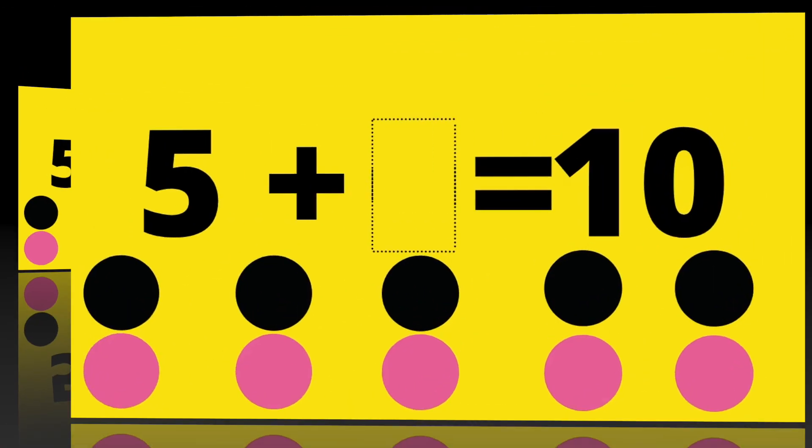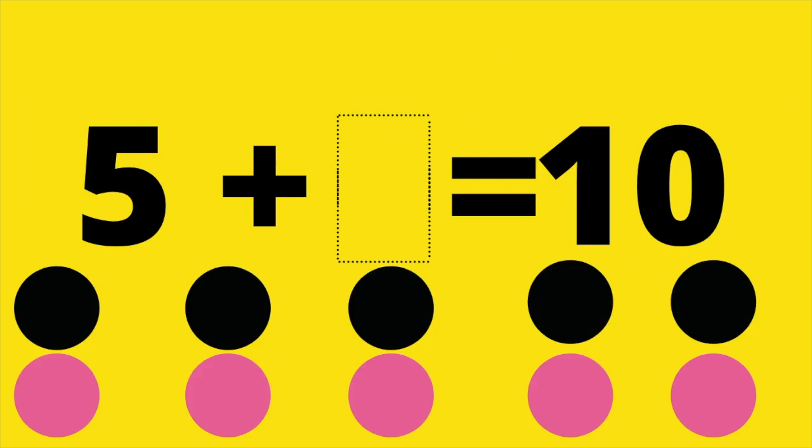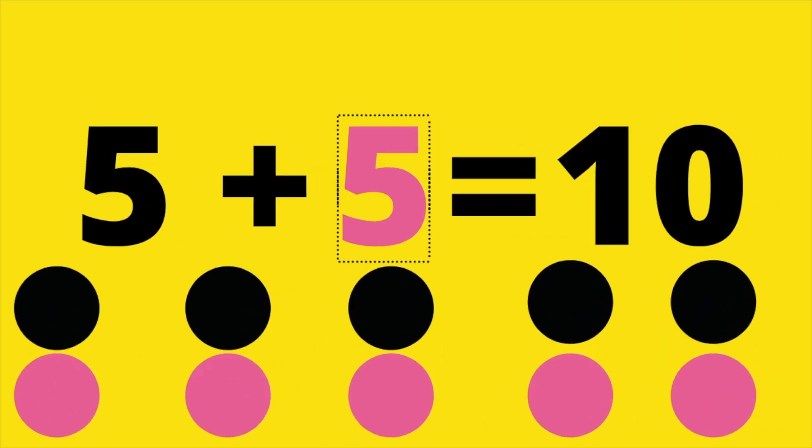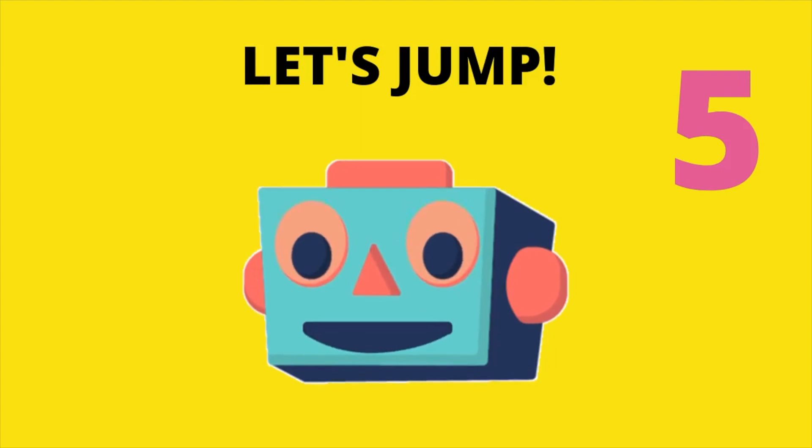Who's ready for the next problem? Let's go. Five plus blank equals ten. Now, don't forget, the pink dots are there to help you figure out the correct answer. Five plus five equals ten. Great job, everyone. I hope you got the right answer. Let's get ready to jump. Let's go. Five jumping jacks. One, two, three, four, five. Yes, you guys are doing a great job.